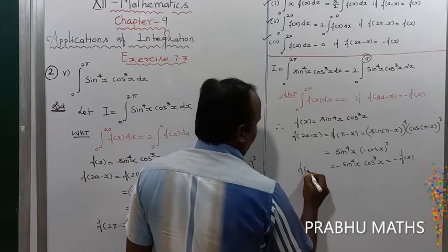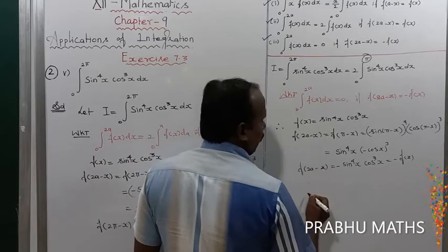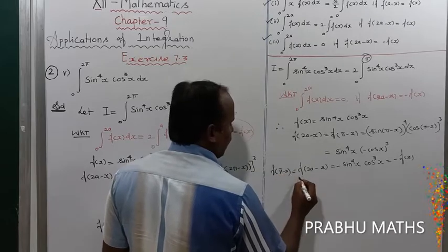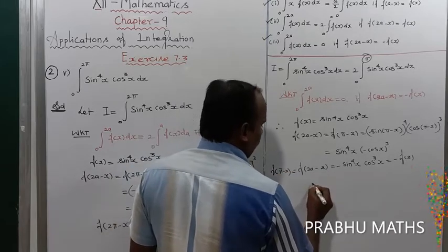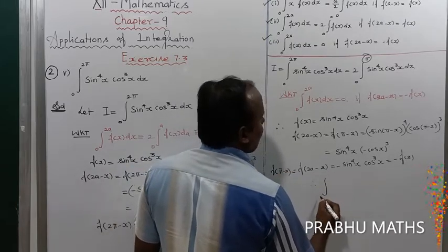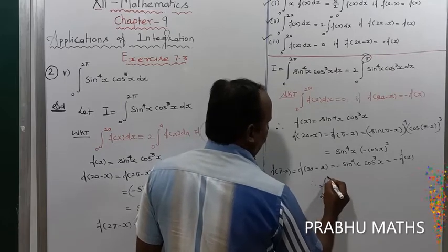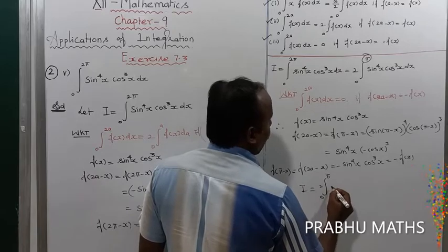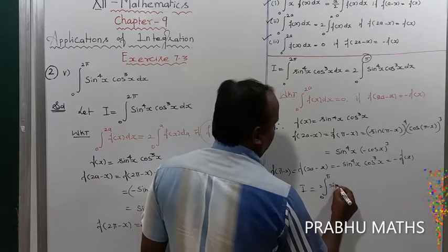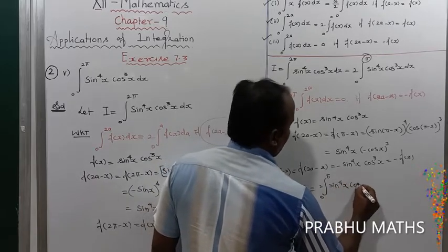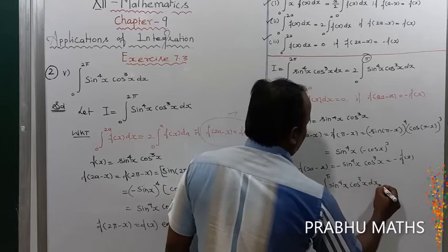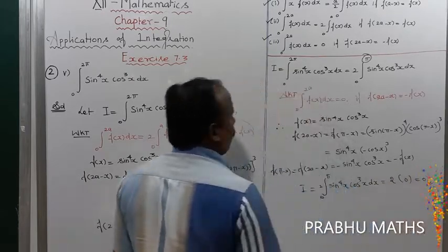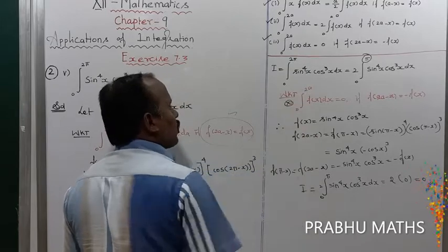The condition f(π - x) = -f(x) is satisfied. Therefore by the property, the integral from 0 to π of sin⁴(x) cos³(x) dx = 0. Hence I = 2 × 0 = 0.